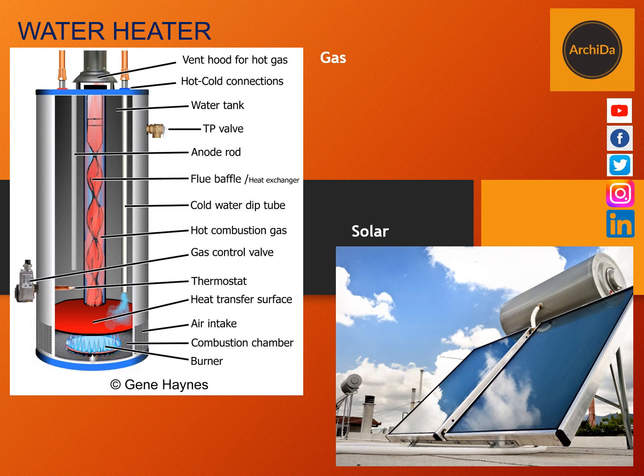Then we have the gas type of water heater. It is similar to the tank-type, but the heating element here is not run by electricity — instead by gas. On the right side portion is what is called a solar water heater. It is usually located on the roof or roof decks, the upper part of the house, where it should be receiving direct sunlight. Using that solar energy, it will heat up the water in your tank, which also provides hot water to your system.